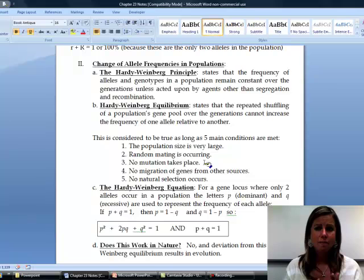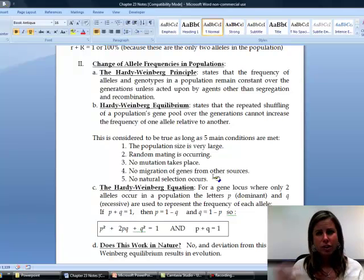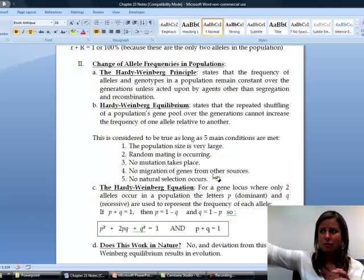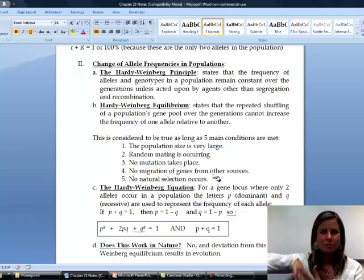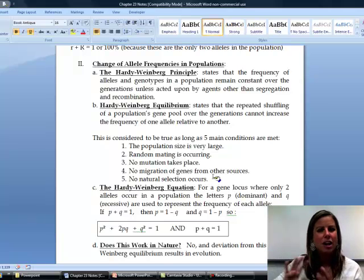The third thing is no mutation can happen, so the DNA has to remain intact. There can't be any substitutions, deletions, anything like that. The fourth thing is that there cannot be migration of genes from other sources. That's called gene flow, so you can't have genes coming in from one population and organisms mixing with these two populations. It kind of has to be isolated.